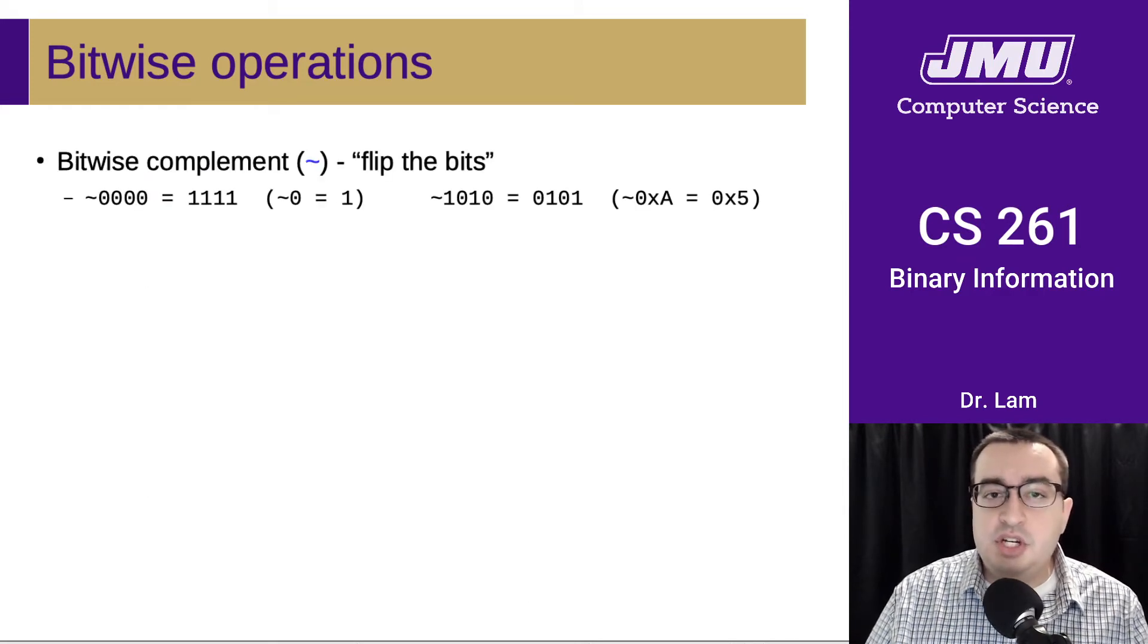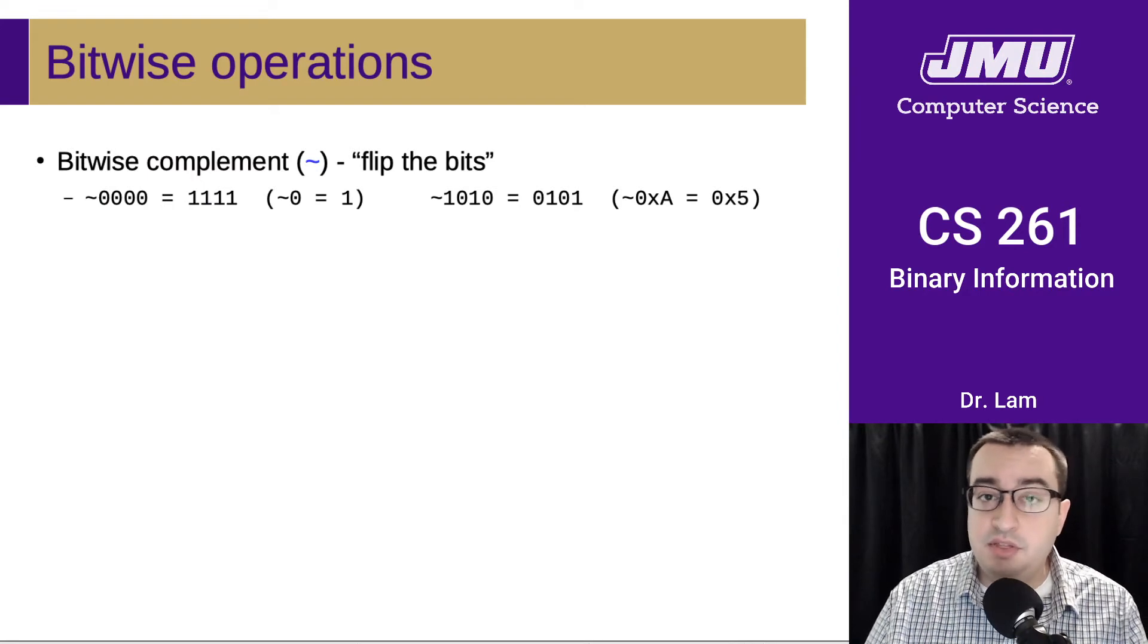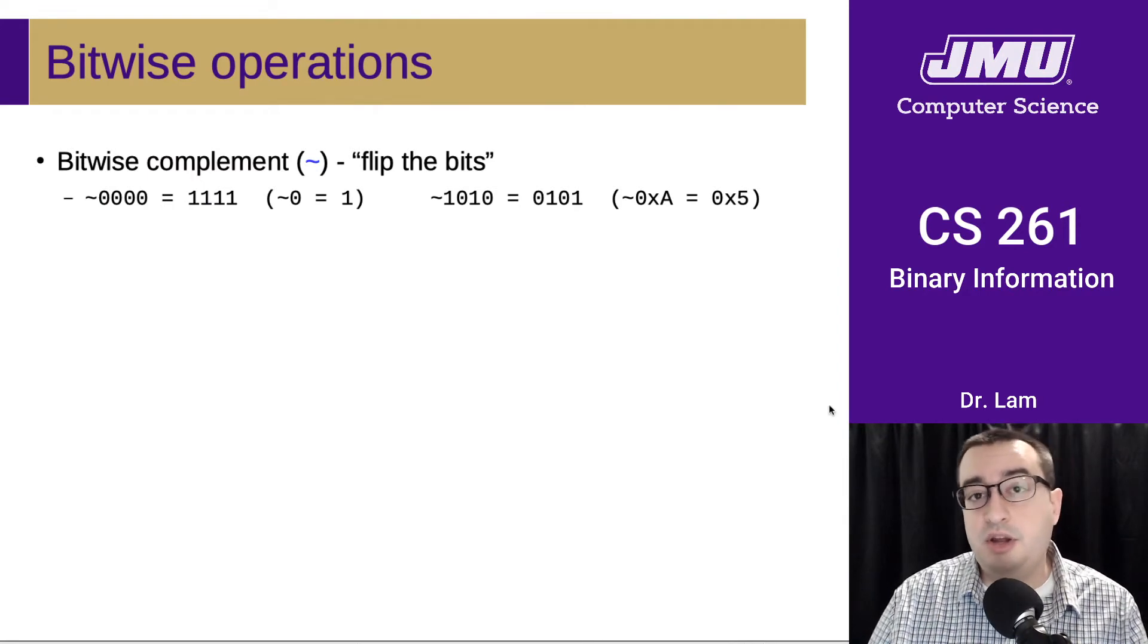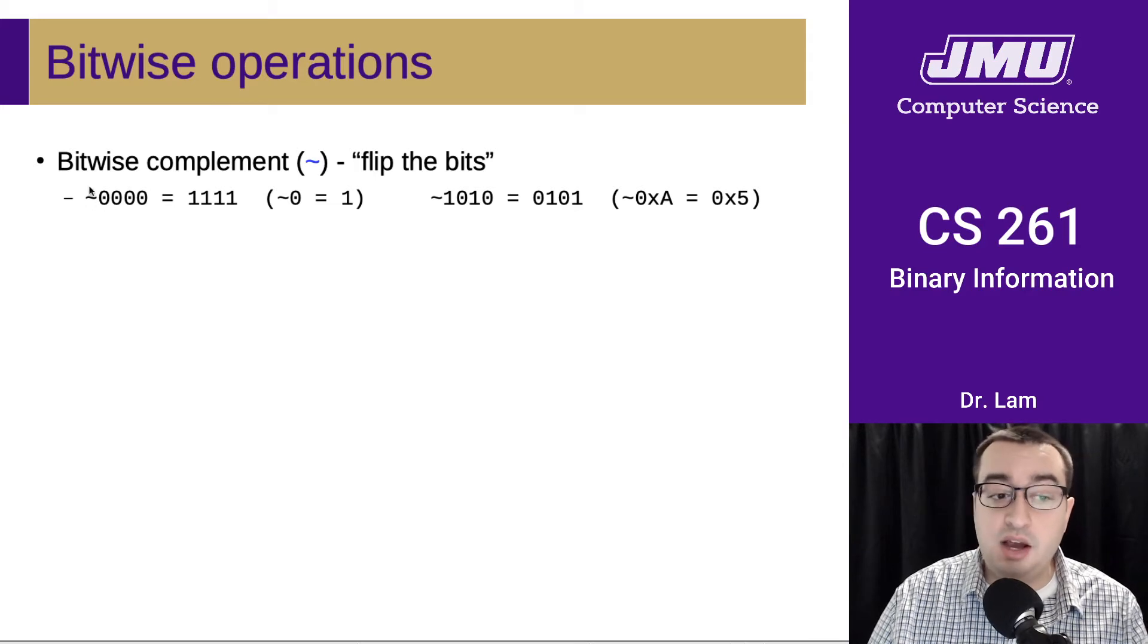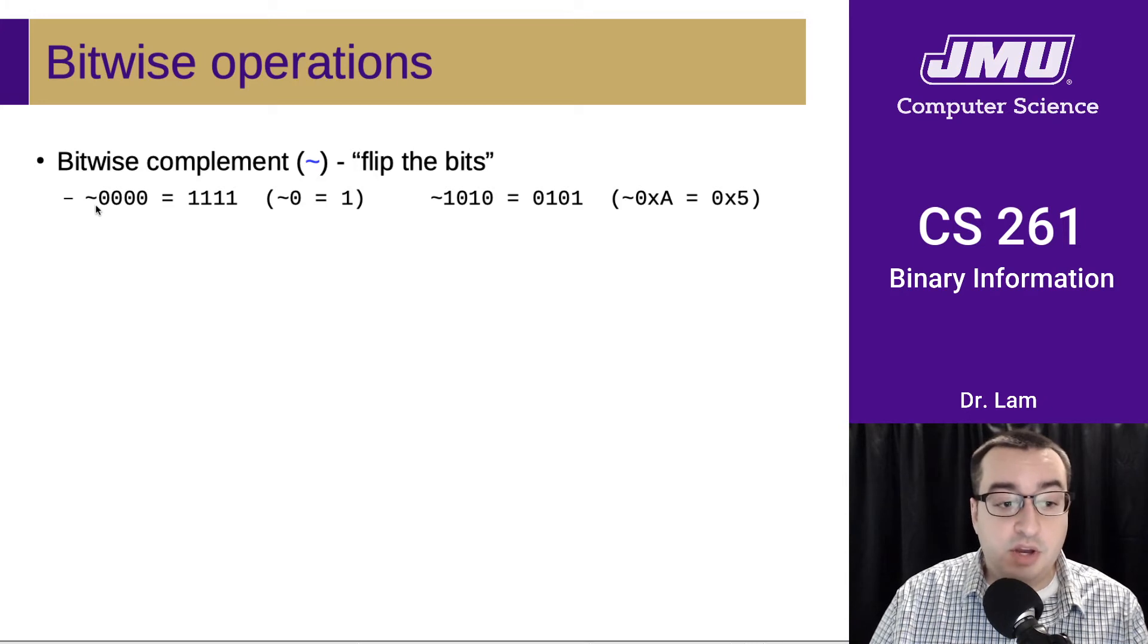There's another operation called the bitwise complement that will be useful once we start talking about integer encodings. The bitwise complement is written using the tilde operator, and it basically means flip all the bits. This is a bitwise operator because it doesn't just flip the first bit—it flips all the bits. The complement of all zeros is all ones.